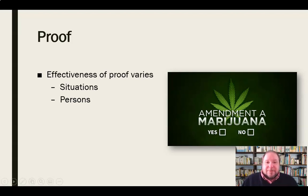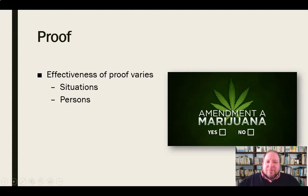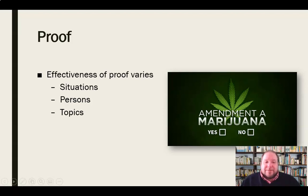We also have to consider the persons involved — looking at demographics, age, sex, employment, or socioeconomic factors in determining how this particular person or audience might perceive our argument and the effectiveness of that proof. Some audiences are going to be more likely to take evidence from particular people or situations and believe it more strongly. We need to consider the persons involved. And finally, topic to topic — people care about different things. Some will feel strongly that marijuana should be legalized, others that it should not, and then you'll have a whole bunch of people in the middle who just don't have an opinion on that particular topic. The effectiveness of proof varies from topic to topic as well.